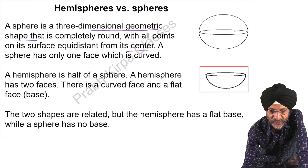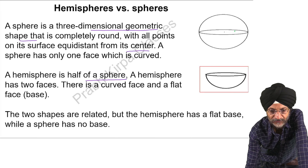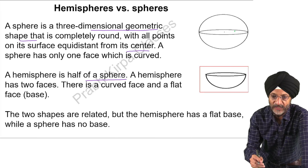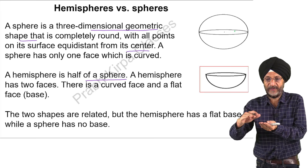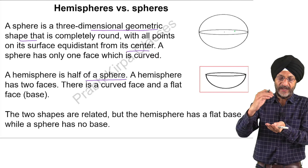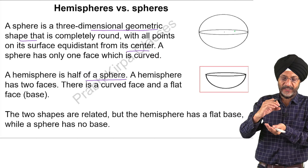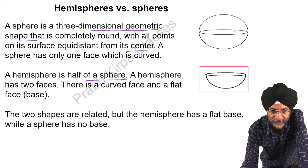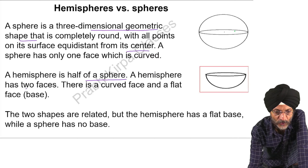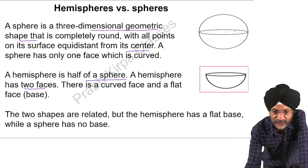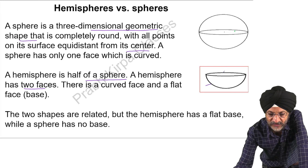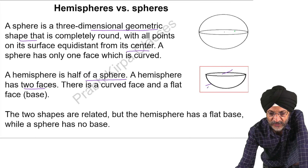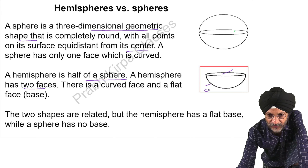Planets like Mercury, Venus, Mars as well as other celestial bodies such as moons and asteroids often exhibit spherical shapes. Now, we have understood what are the real world examples of sphere.